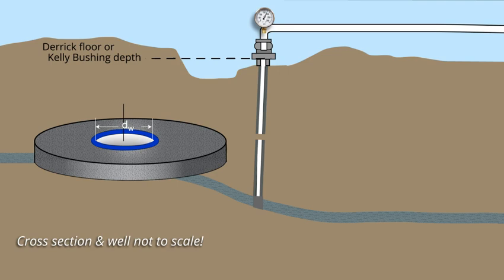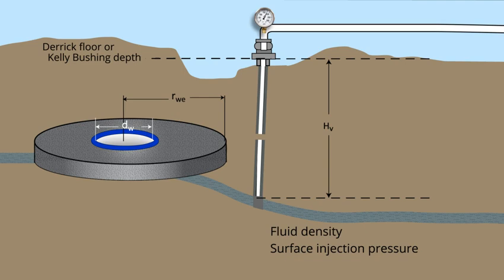Information to note includes the inside tubing diameter, D sub W, the radius of either the casing or open hole, R sub WE, and the vertical height of the tubing or water column from the top down to the packer or perforations, capital H sub V. These pieces of information, along with the fluid density and surface injection pressure, are used to calculate the bottom hole flowing pressure.